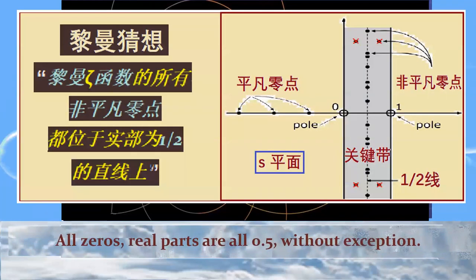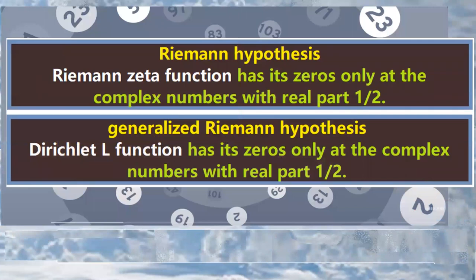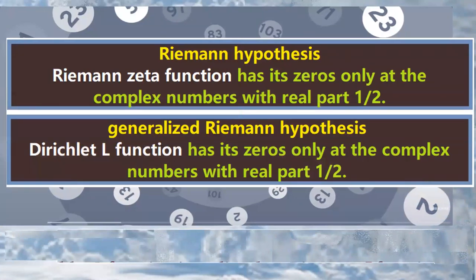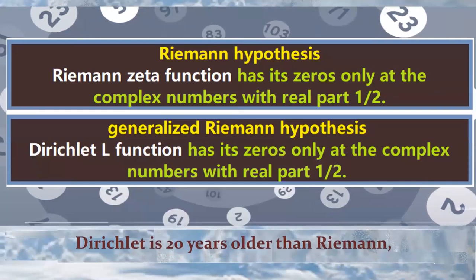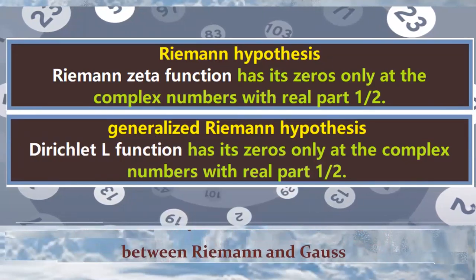There are Riemann hypothesis and generalized Riemann hypothesis. Dirichlet L function is another function earlier than Riemann zeta function. Dirichlet is 20 years older than Riemann, between Riemann and Gauss.